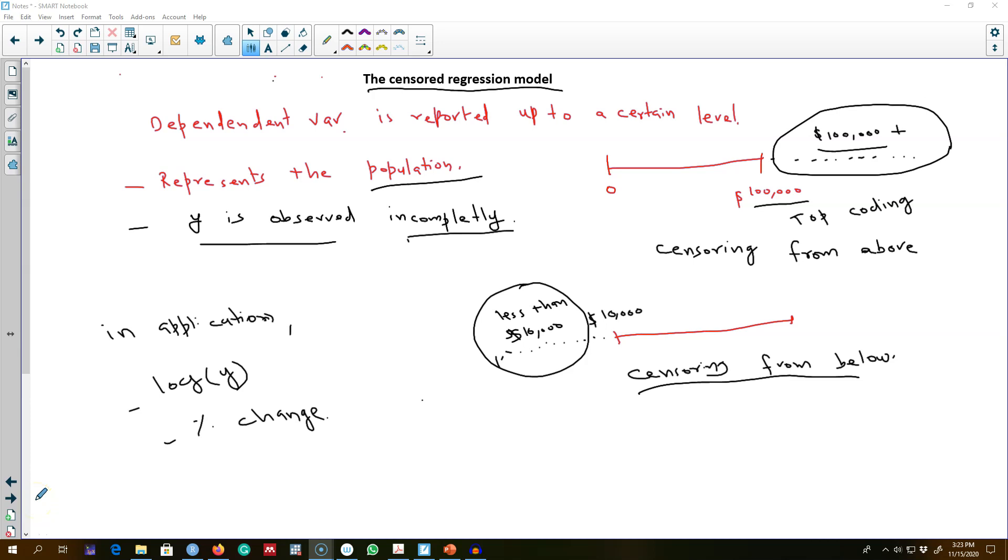I talked about the censored regression model in which our dependent variable is reported up to a certain level, although we observe values after that threshold, but we have incomplete observations about those values. And I give you two examples.